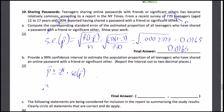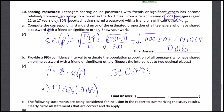We have our p-hat value, which is 0.3, plus or minus the z-star value of 2.576, times the standard error from the previous part, 0.0165. Multiplying those two numbers together gives us our margin of error, which is 0.0425. We then add and subtract this from 0.3, giving us a final confidence interval of 0.2575 to 0.3425.